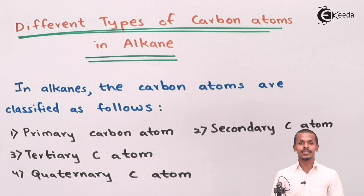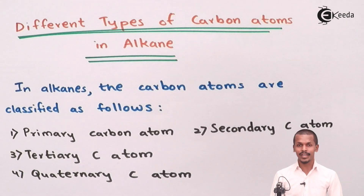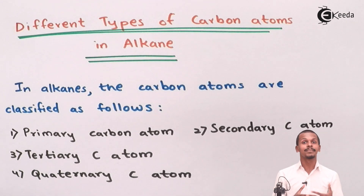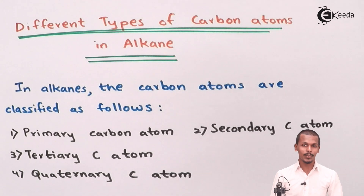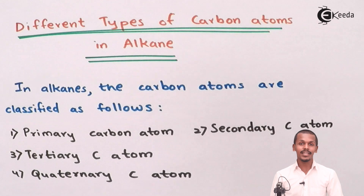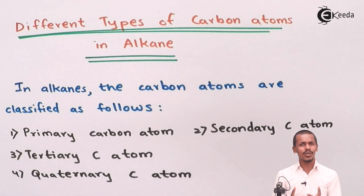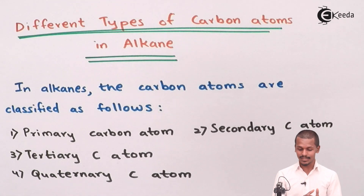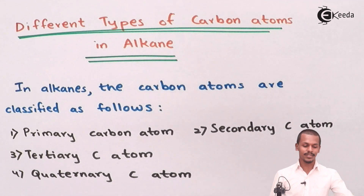In a straight chain alkane we could observe primary and secondary carbon atoms, and in a branched chain we could see secondary or tertiary carbon atoms. Let us talk about what primary and tertiary carbon atoms actually are, starting with the primary carbon atom.